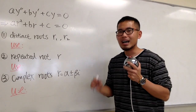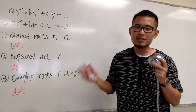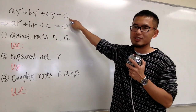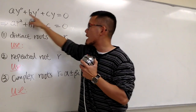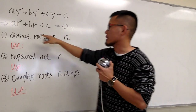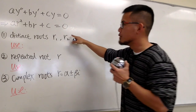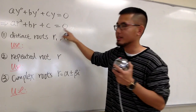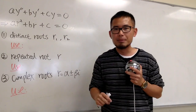In this video, I'm going to summarize how to solve a second-order linear differential equation with constant coefficients, and we will just focus on the homogeneous case. The first step is to change this to its corresponding auxiliary equation, or the characteristic equation. This is nothing but just a quadratic equation in terms of r, and we have three possibilities.